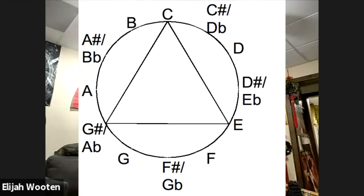Every time Coltrane had a major chord, he would move his major chords up augmented because a major chord comes from the whole tone scale — it's got a major third. So a major chord is like the child of the whole tone scale or the augmented chord. That major chord can do everything a whole tone scale can do. Coltrane just gave you the triad, but he knew it could function as a full whole tone scale.